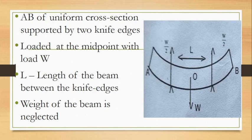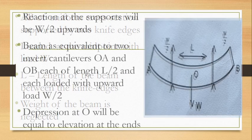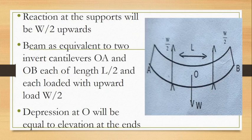As we have done in the last derivation, here also the weight of the beam is neglected. We have loaded a weight W at the midpoint of the beam. The reaction at the supports — that is, at the knife edges — will be W by 2 upwards.